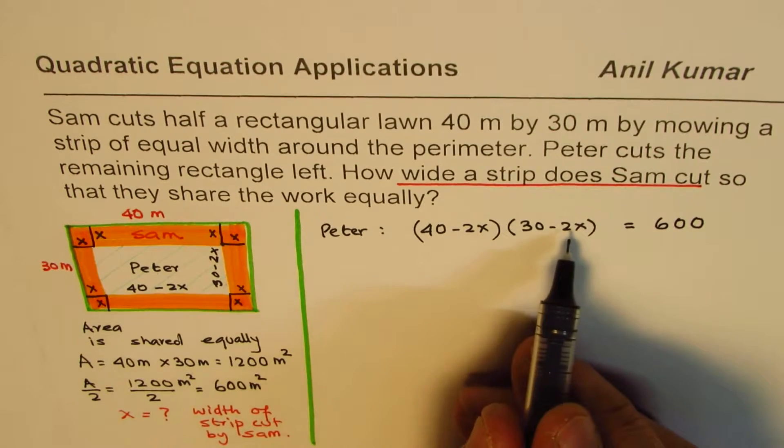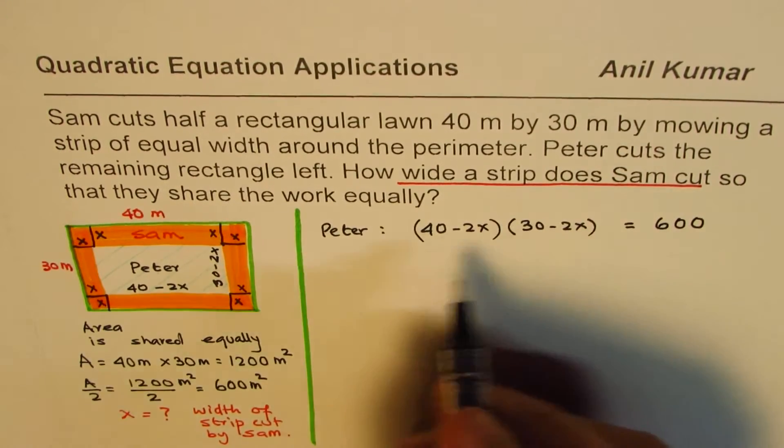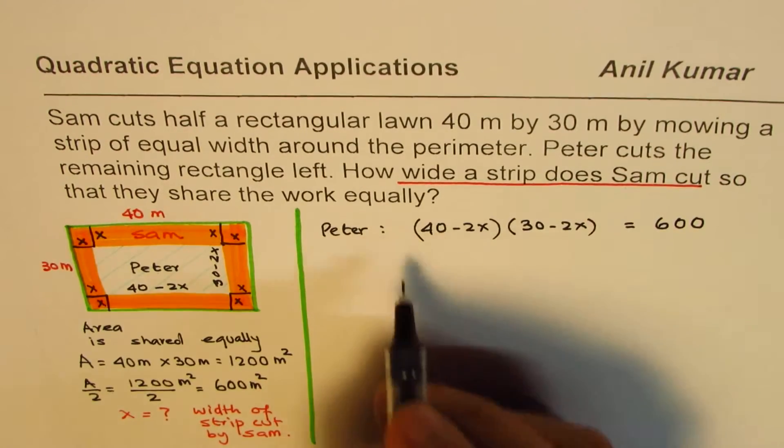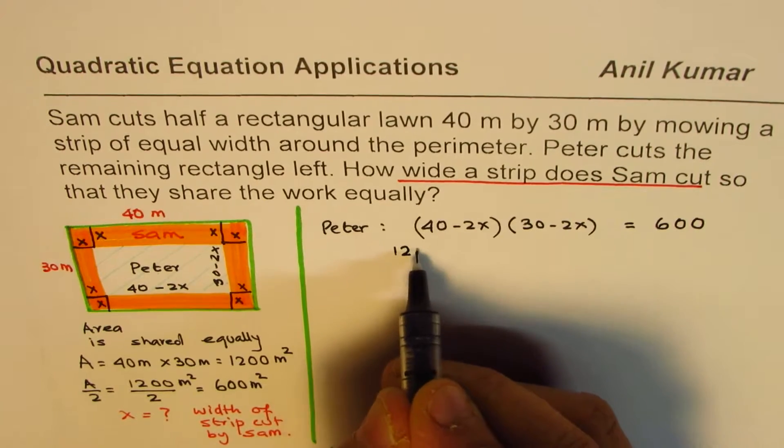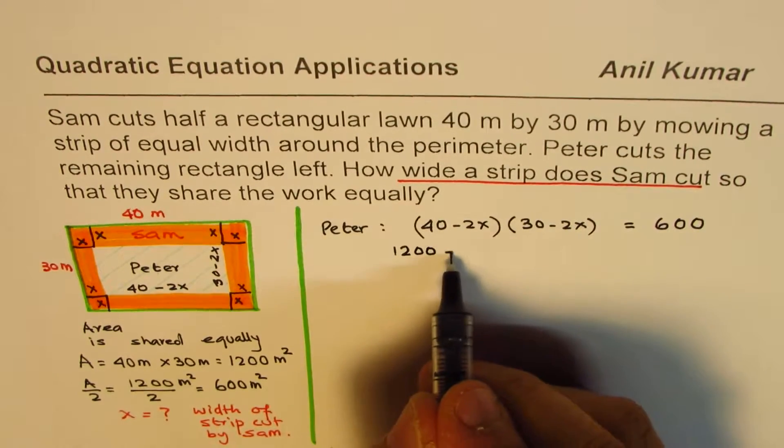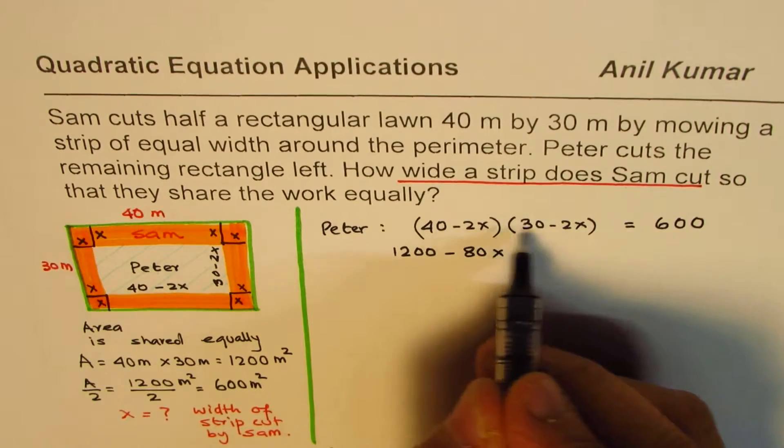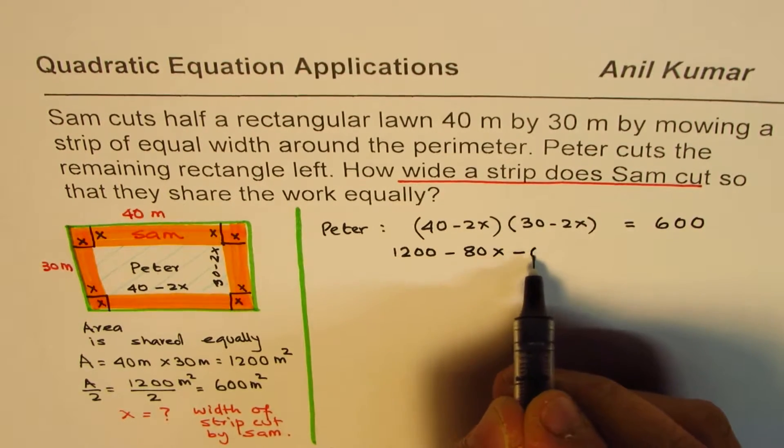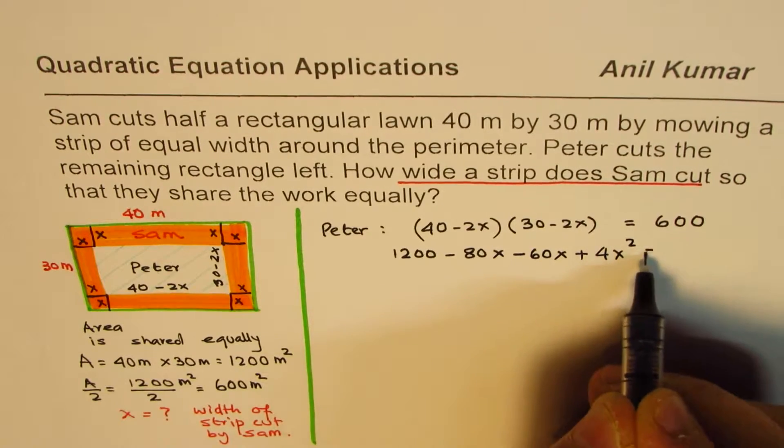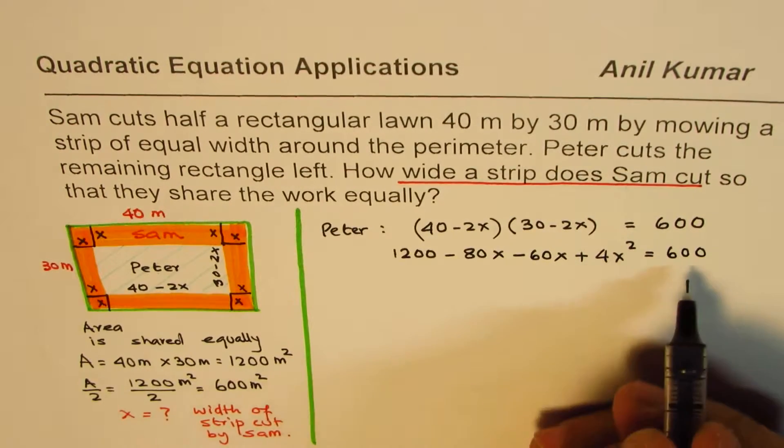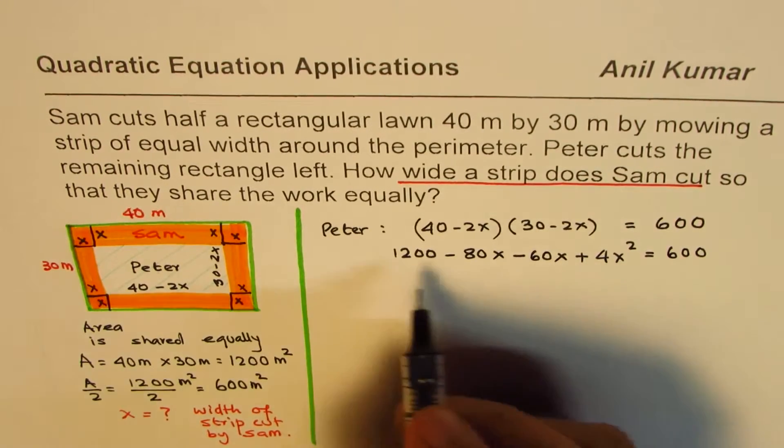Let's multiply. 40 times 3, 4 times 3 is 12, so 1200 minus 80x. Now multiply both by minus 2x, so minus 60x plus 4x² equals 600.